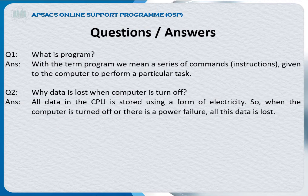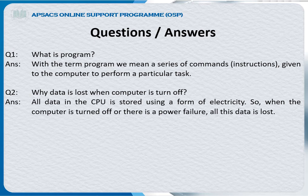These are the questions you have to memorize from page number 24. Question one: what is a program? Answer: with the term program we mean the series of commands — instructions given to the computer to perform a particular task. Question two: why is data lost when the computer is turned off? Answer: all data in the CPU is stored using a form of electricity, so when the computer is turned off or there is a power failure, all the data is lost.